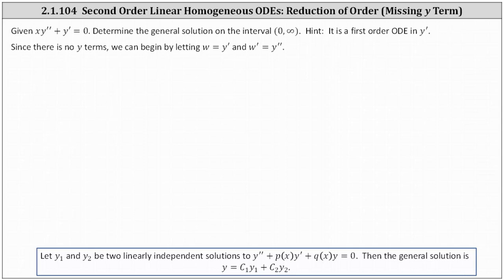In previous problems, when using the method of reduction of order, we were always given one solution, y₁(x), and then we determined a second solution so that we could find the general solution. In this case, notice how we're not given a solution, but analyzing the differential equation, if we let y equal any constant, the differential equation would be satisfied because y prime and y double prime would both be zero. However, we can skip over that step because there's no y term and perform a substitution